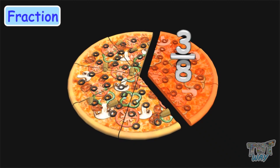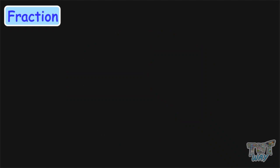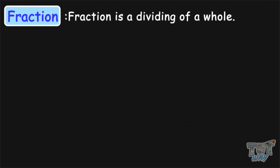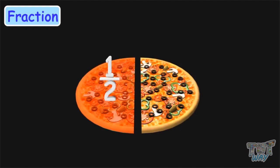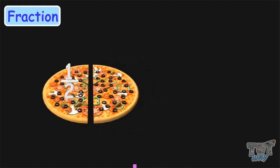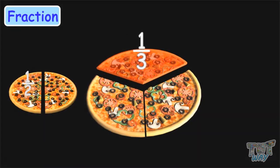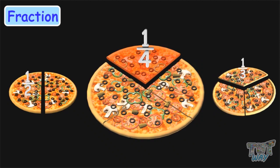So, now you know very well what is a fraction. Fraction is a dividing of a whole. And one by two means one out of two equal parts. One by three means one out of three equal parts. One by four means one out of four equal parts.